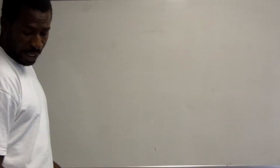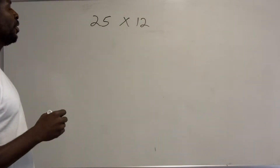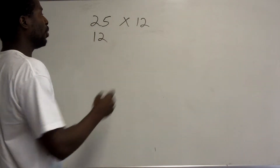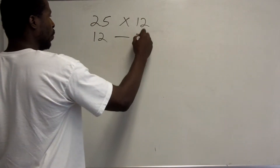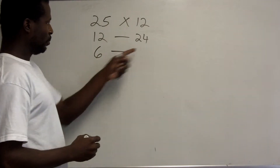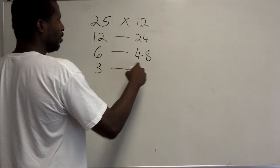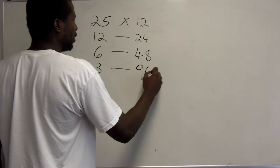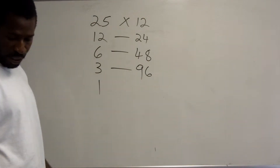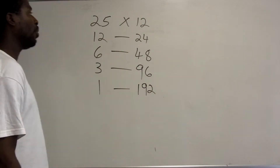Let's try another example: 25 multiplied by 12. Half of 25 is 12 and a half — we record 12 and ignore the decimal, doubling 12 gives 24. Half of 12 is exactly 6, doubling 24 gives 48. Half of 6 is 3, doubling 48 gives 96. Half of 3 is one and a half — we record 1 and we're done; doubling 96 gives 192.